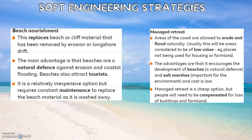Managed Retreat. Areas of the coast are allowed to erode and flood naturally. Usually these will be areas considered to be of low value — for example, places not being used for housing or farmland. The advantage is that it encourages the development of beaches and natural defences, as well as salt marshes, which is important for the environment and has a low cost. Managed Retreat is a cheap option, but people will need to be compensated for loss of buildings and farmland.